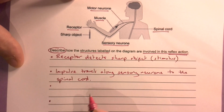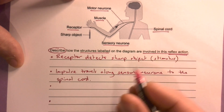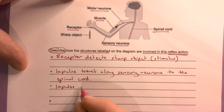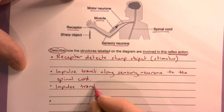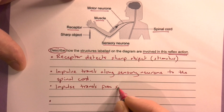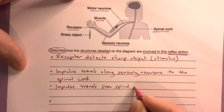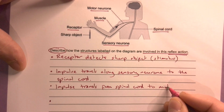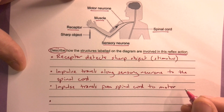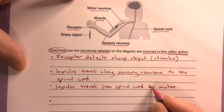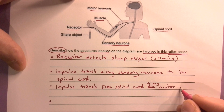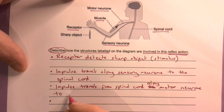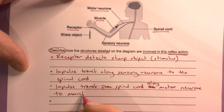It then travels from the spinal cord — so the impulse travels along the motor neuron to the muscle cells, to the muscle.